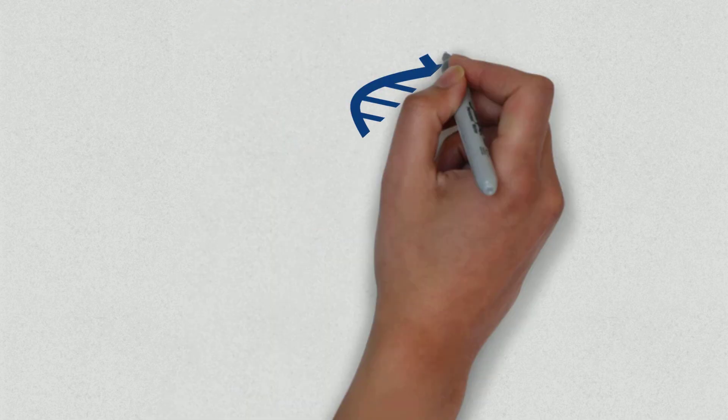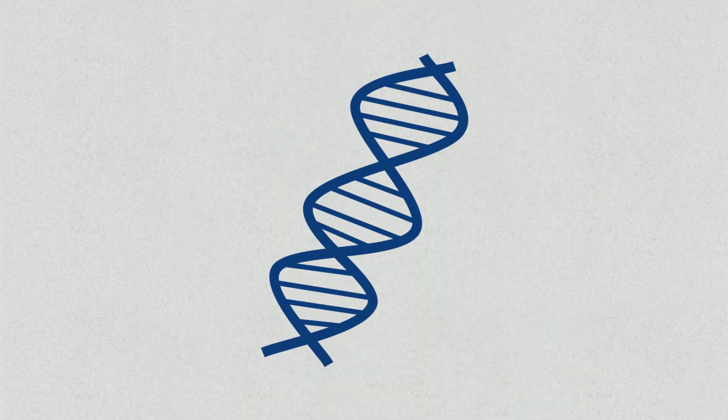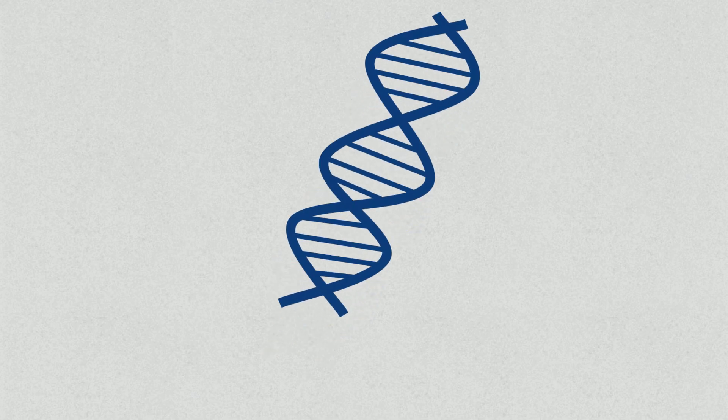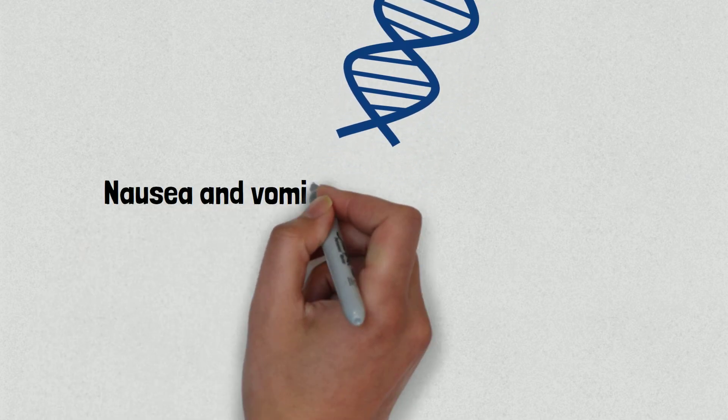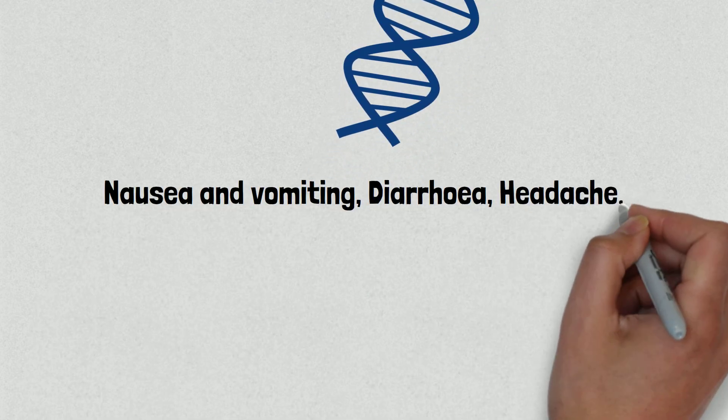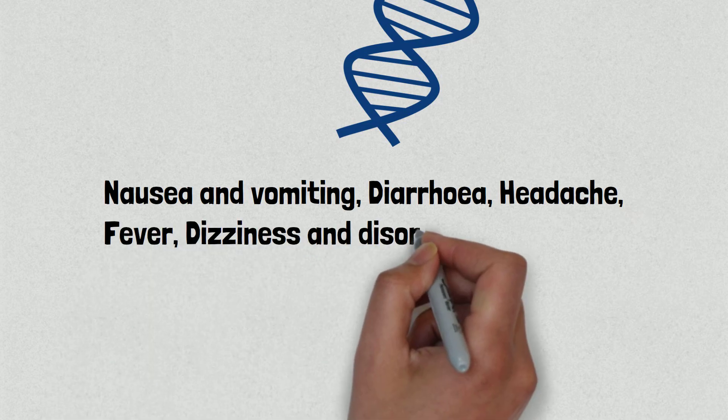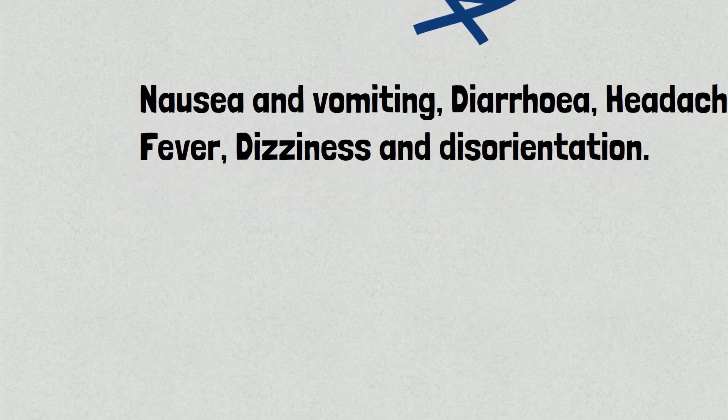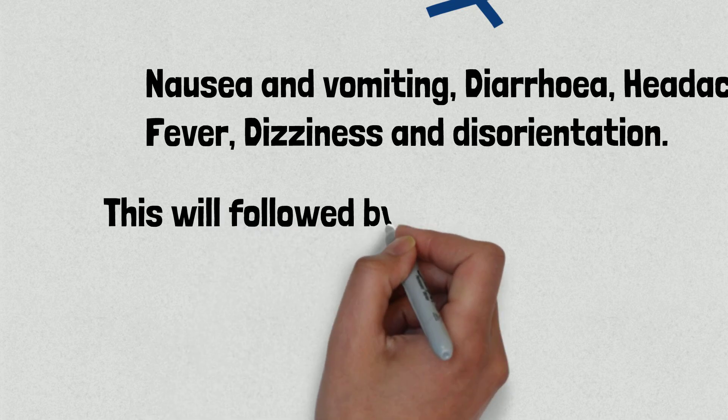If the person receives a high dose, then the ionizing radiation will break your cellular structure apart and you'll get symptoms like nausea and vomiting, diarrhea, headache, fever, dizziness and disorientation.